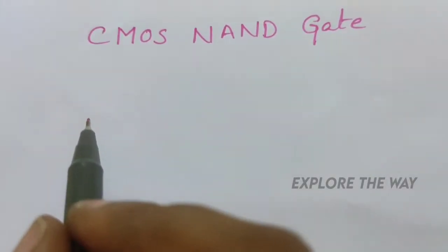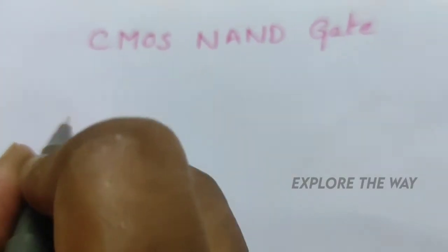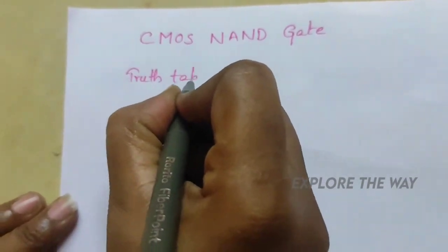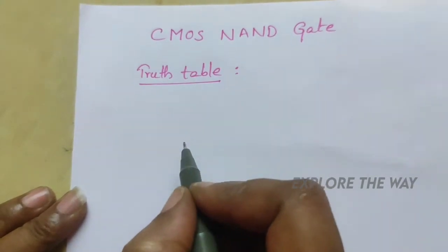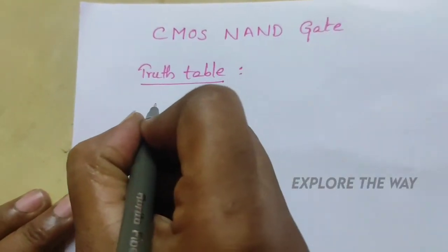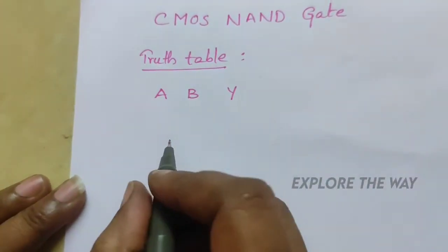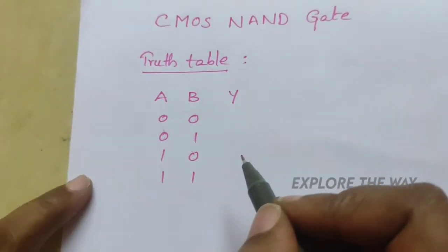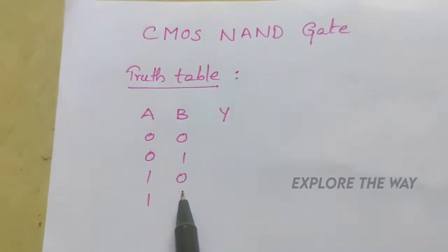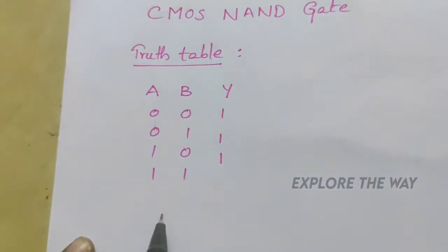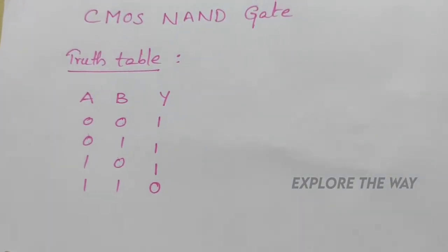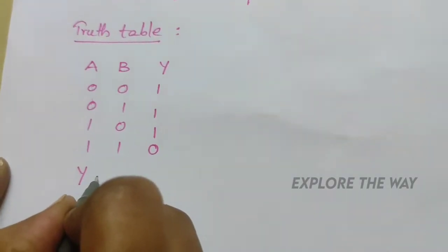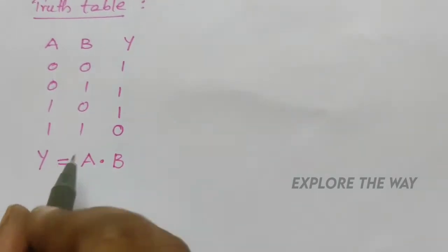In this video I am going to explain the design of CMOS NAND gate. The functionality of any gate or logic circuit can be expressed using a truth table. For the NAND gate, inputs are A, B and output is Y. When at least one input is 0, the output is 1, and when all inputs are 1, the output is 0. The logic function for the NAND gate is Y = (A·B)̄.